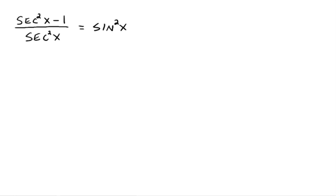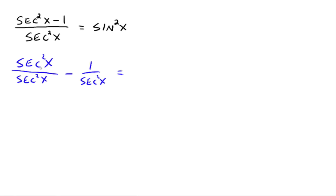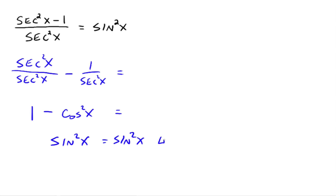Here's the second example. The more complicated side would be the left side, so we're going to see if we can turn it into sine squared x. We can rewrite it as two fractions subtracted: secant squared x over secant squared x minus 1 over secant squared x. Secant squared x over secant squared x is just 1, and 1 over secant squared x is cosine squared x. Then 1 minus cosine squared x — since sine squared plus cosine squared equals 1 — must equal sine squared x. Identity verified.